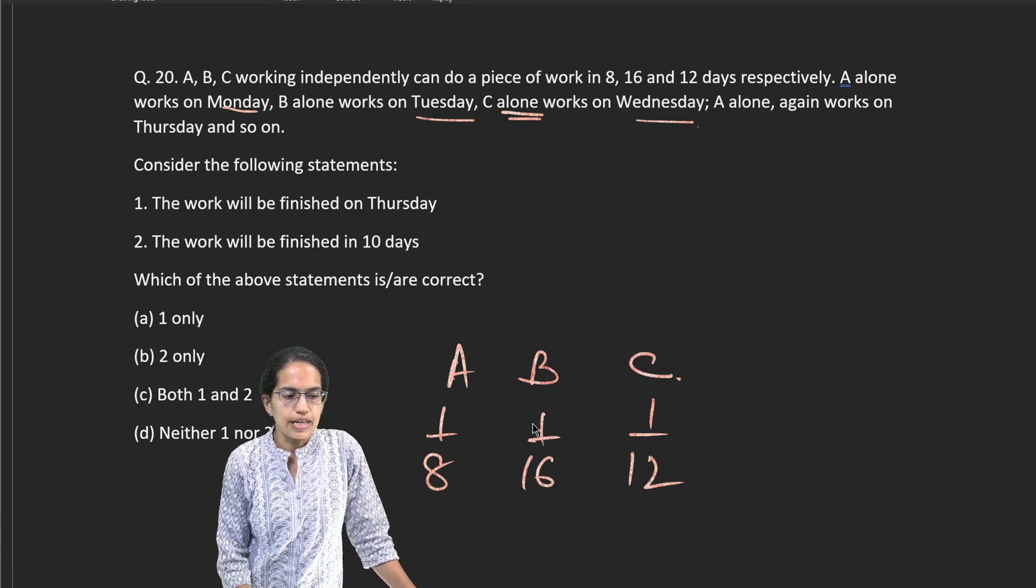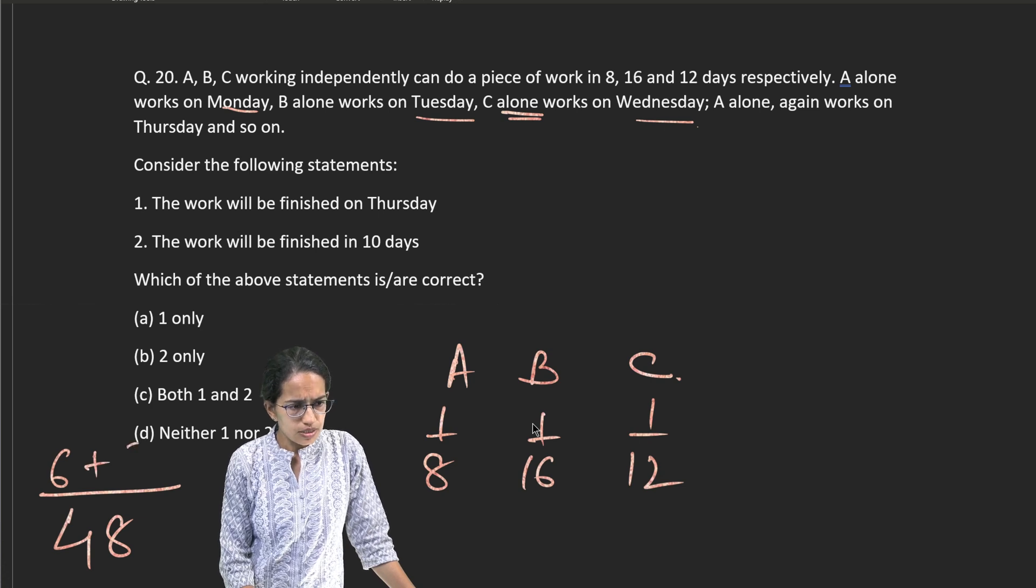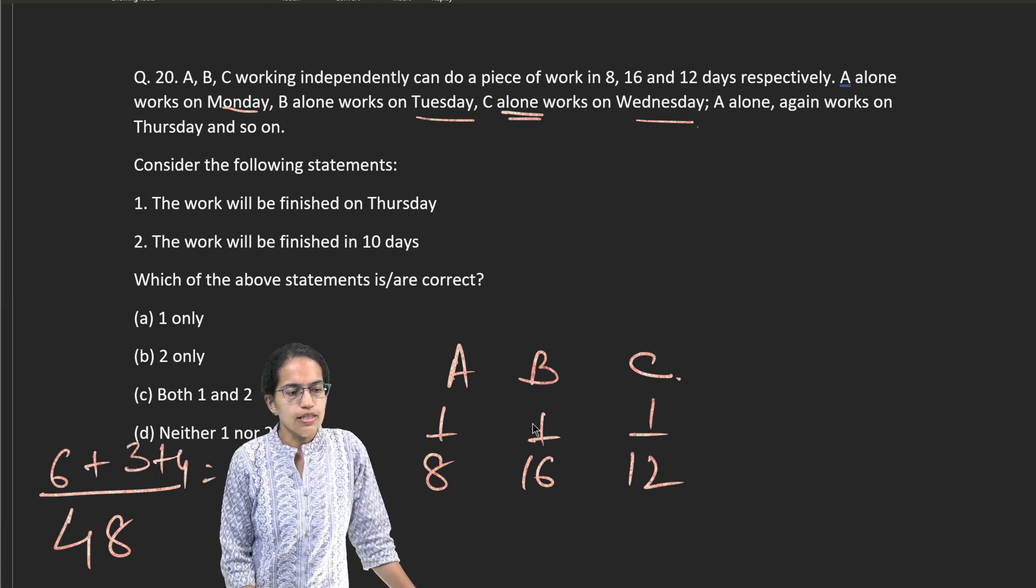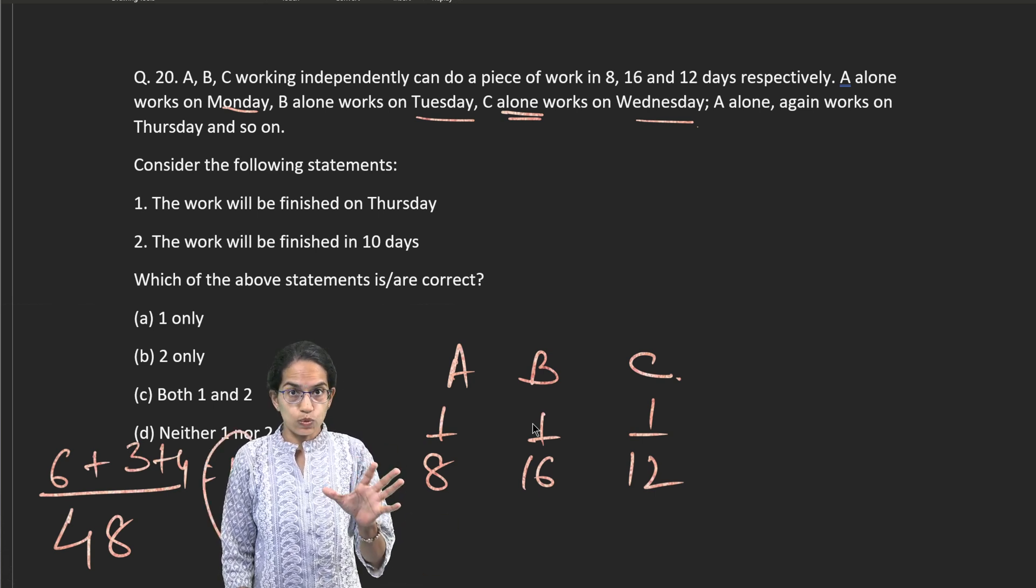I take the LCM, that's 48. I find this out. So this is 6 plus 3 plus 4. That gives me 13. 13 by 48. That's the combined work.